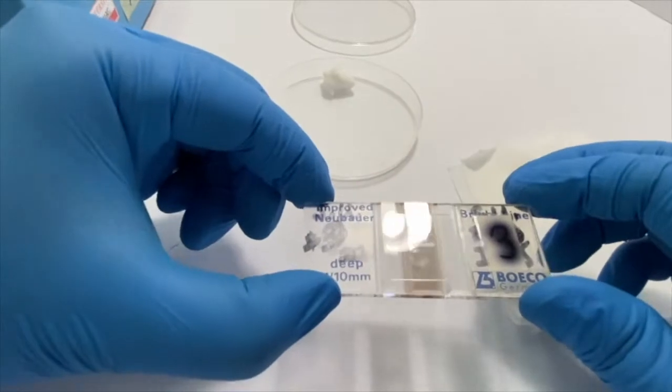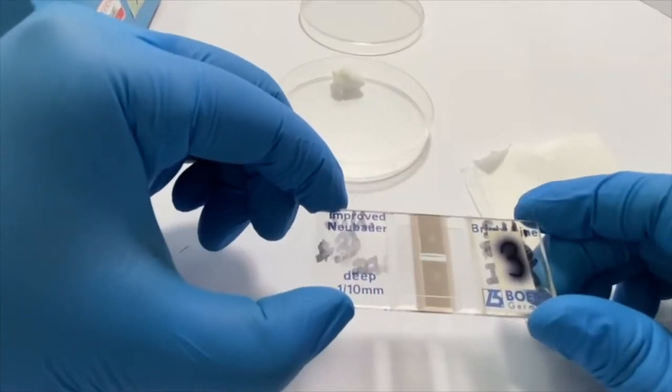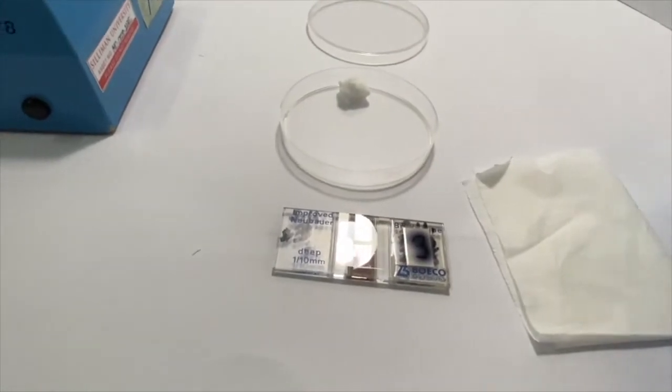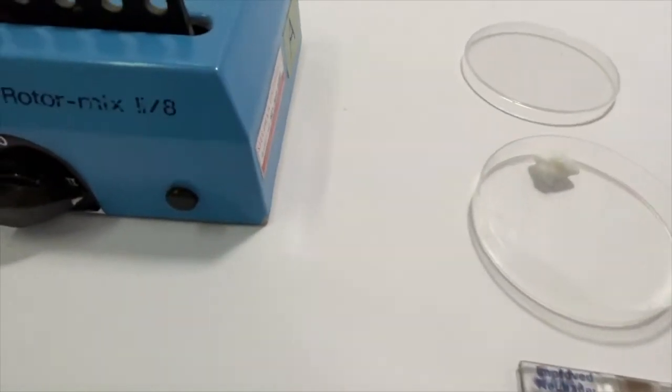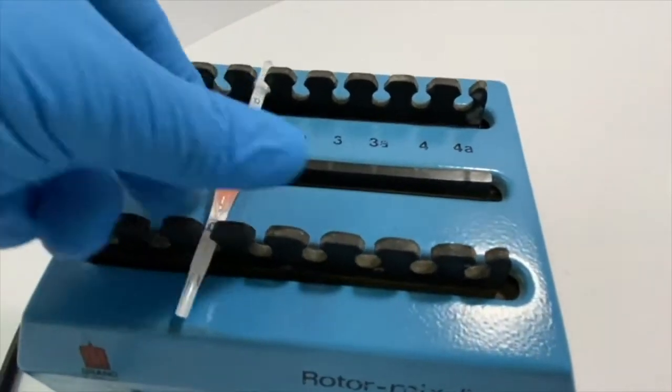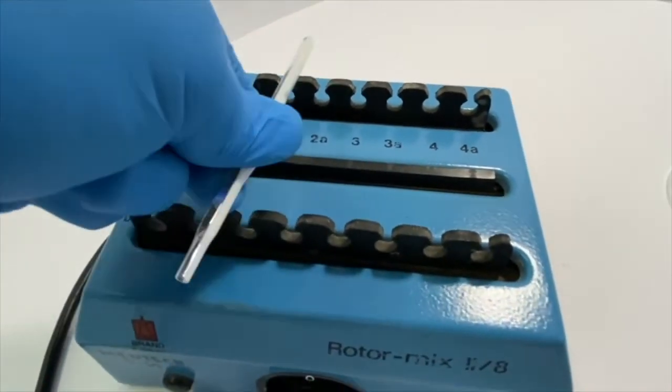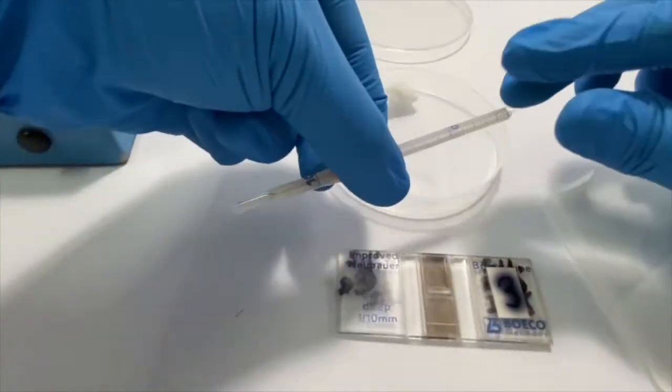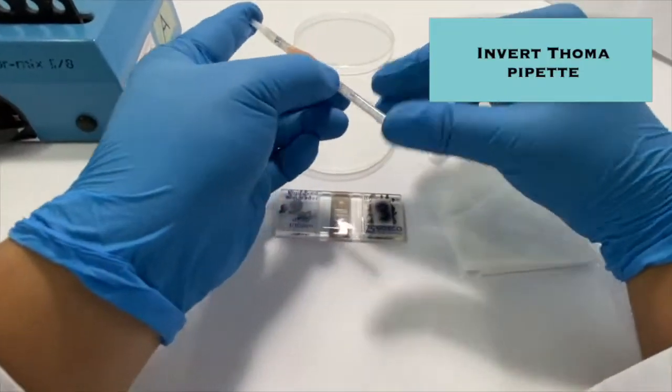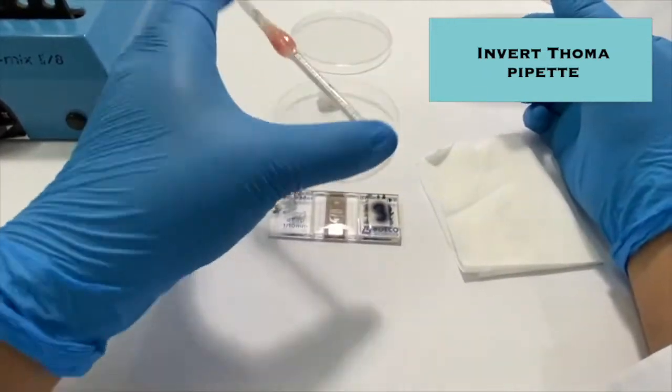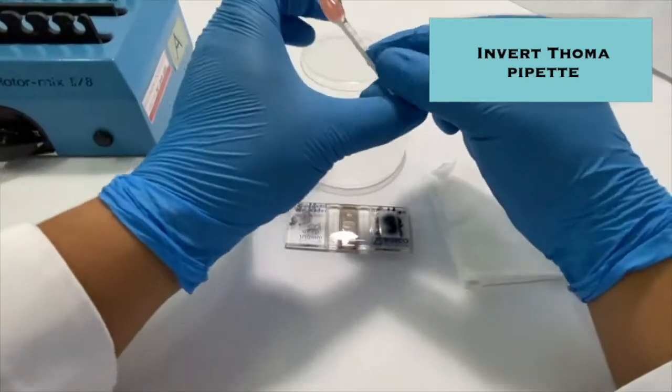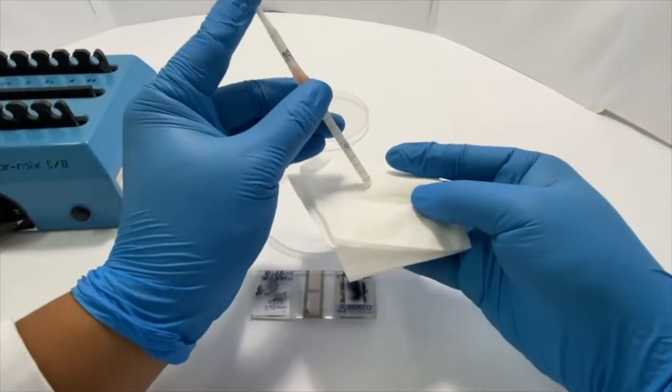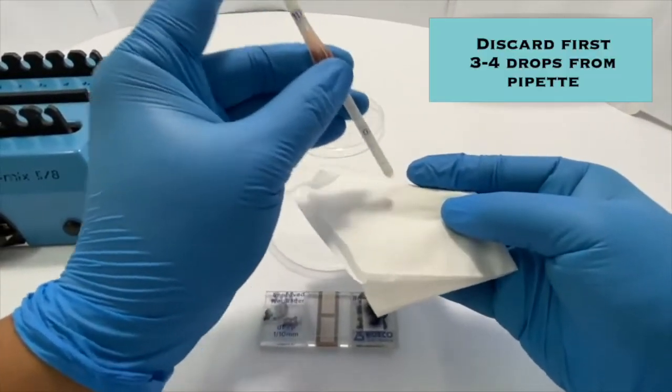Once you have ensured that your coverslip is properly positioned, place the hemocytometer again on a flat surface. Now take your thawma pipette, which should have been shaking for at least 3 to 5 minutes, and invert it a few times to mix. Blot the initial contents of the pipette on a tissue paper to remove excess diluent.